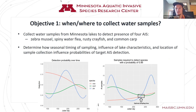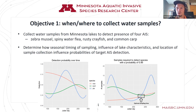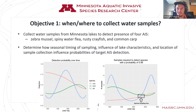I am the graduate student focusing on objective one of this project. As Josh mentioned, objective one is really focused on when and where eDNA works best. A large focus of this objective is figuring out where in a lake we can sample best and when we can sample best — by which I mean maximizing our ability to detect aquatic invasive species. We focus on four AIS for this project that are widespread and known to have pretty detrimental impacts on lakes.